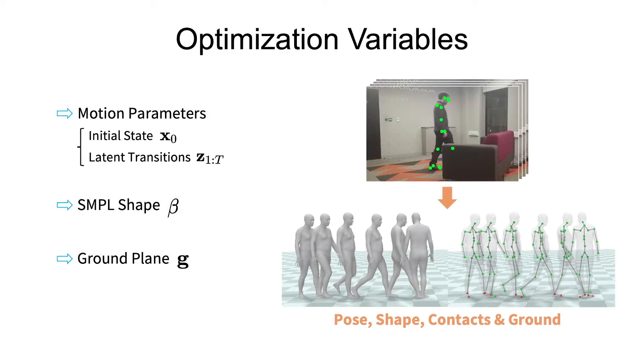In addition to motion parameters, shape and ground plane parameters are also optimized. Following optimization, the final outputs are then 3D poses, shape, contacts, and the ground plane for the observed sequence.